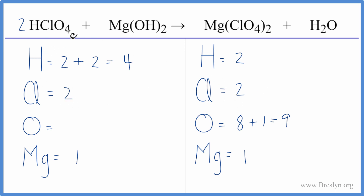Now four times two — that's eight oxygens — plus two times one gives us two. So eight plus two is ten oxygens on the reactant side.